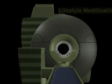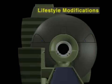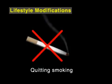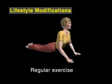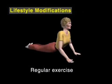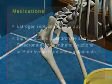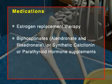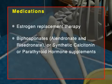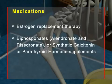Osteoporosis can be treated by changes in lifestyle, like quitting smoking, regular exercise, and a balanced diet, and by taking medications such as estrogen replacement therapy, bisphosphonates, alendronate, and risedronate, or synthetic calcitonin or parathyroid hormone supplements.